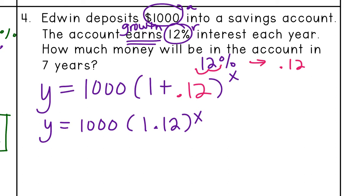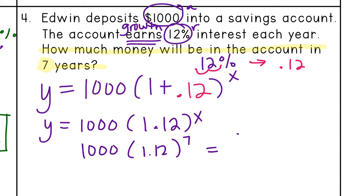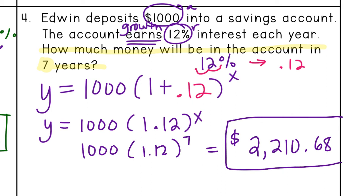Solving the question — how much money will be in the account in seven years — we plug in seven. Since this is money, I get $2,210.68.